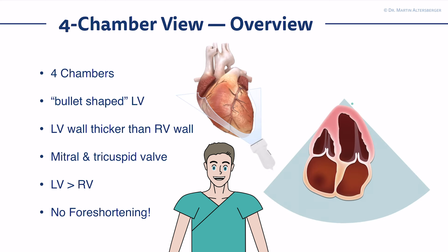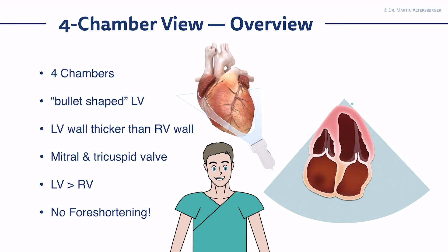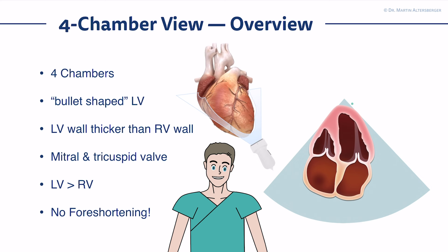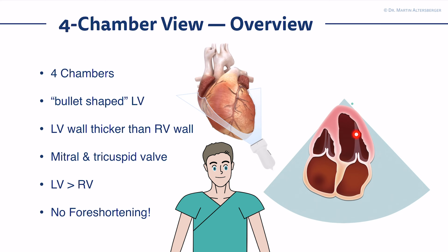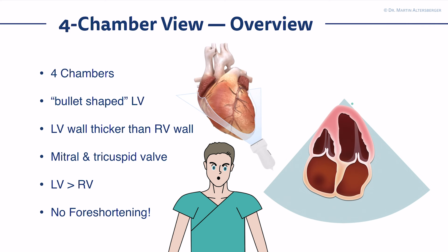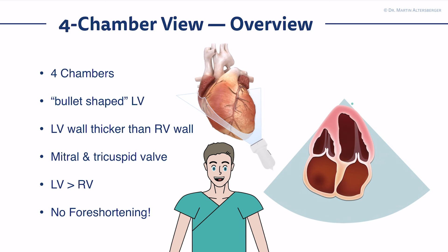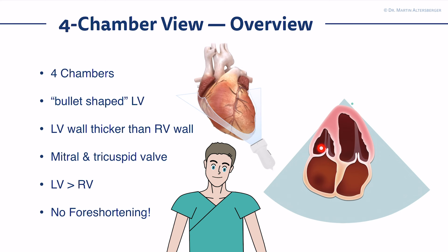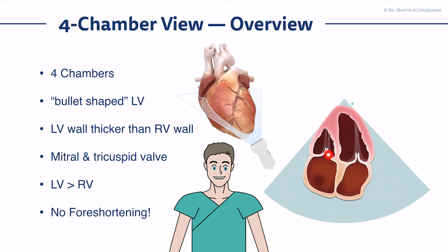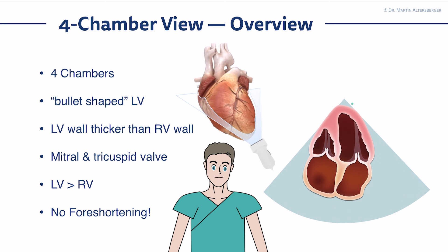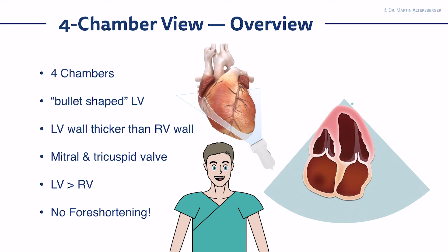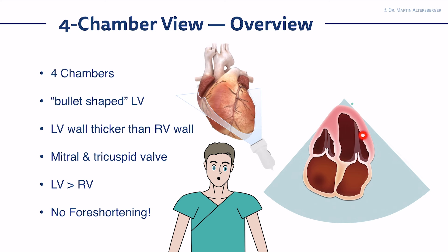In the four chamber view, you get an overview of all four cardiac chambers. The left ventricle should be bullet-shaped, and the left ventricular wall should be thicker than the right ventricular wall due to the pressure difference between those chambers. You also need to identify valvular structures: the anterior and posterior leaflets of the mitral valve, and the septal and anterior-posterior leaflets of the tricuspid valve. The left ventricle should be larger than the right ventricle — overall approximately a two-to-one ratio.